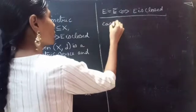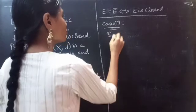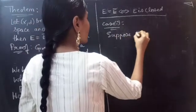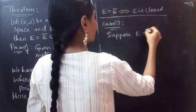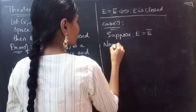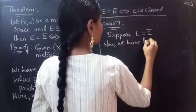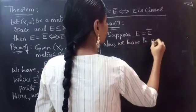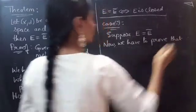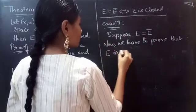Case 1. Suppose E equals E-bar. Now we have to prove that E is closed.